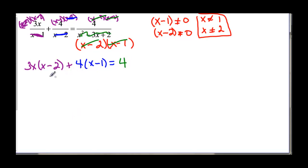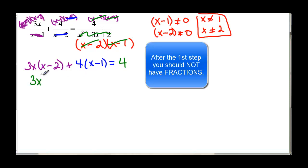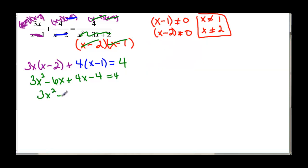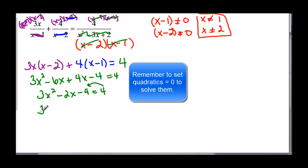Now I distribute and solve. I get three x squared minus six x, and distributing again, four times x is four x minus four, equals four. Simplifying: three x squared minus six x plus four x gives minus two x, and minus four equals four. I need to bring the four to the other side to set it equal to zero: three x squared minus two x minus eight equals zero.